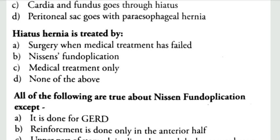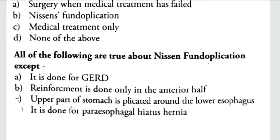Next question: hiatal hernia is treated by — the correct options are surgery when medical treatment has failed, and Nissen fundoplication. Final question: all of the following are true about Nissen fundoplication except: it is done for GERD (correct); reinforcement is done only in the anterior half (wrong — this is the exception); the upper part of the stomach is plicated around the lower esophagus (correct); it is done for paraesophageal hiatal hernia (correct). In fundoplication, we use a laparoscope to hold the fundus, wrap it around the lower esophagus, and suture it in place.